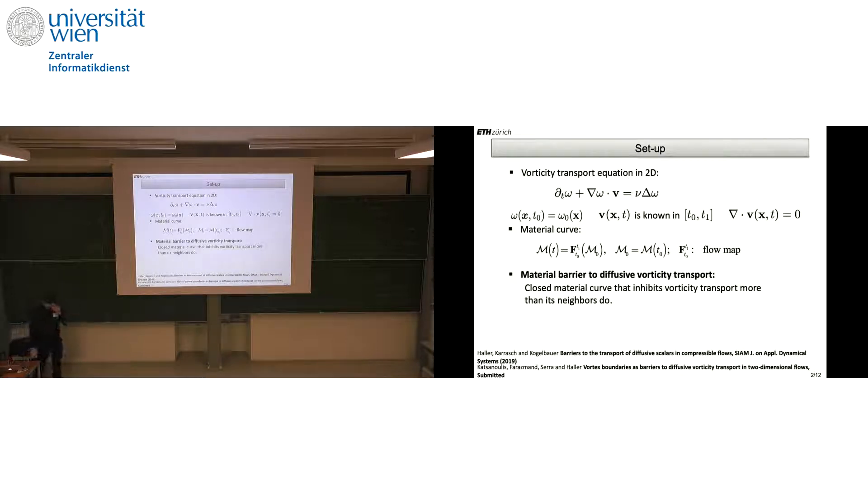In this setting we look for material barriers to the diffusive transport of vorticity: closed material curves that inhibit the transport of vorticity more than their neighbors do. The big question is whether vorticity in two dimensions actually behaves like a passive scalar. The definitive answer to that question is yes.